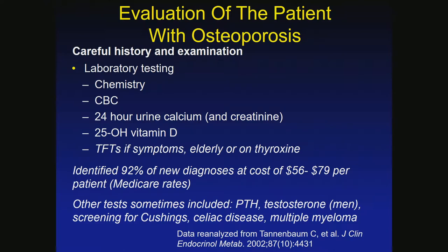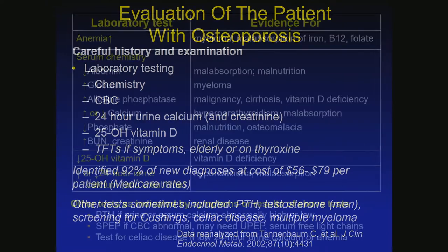Other tests we do include PTH, testosterone in men, and screening for Cushing's, celiac disease, and multiple myeloma — if we're thinking down that road and don't come up with anything, especially if the bone density is really low or they're fracturing. What are we looking for? If albumin is low, we think malabsorption or malnutrition. If globulin is up, we think myeloma.